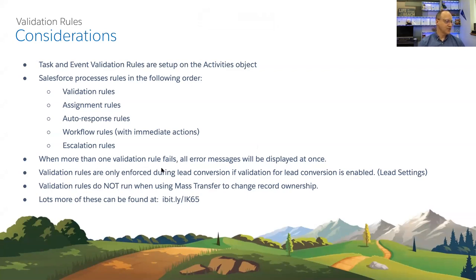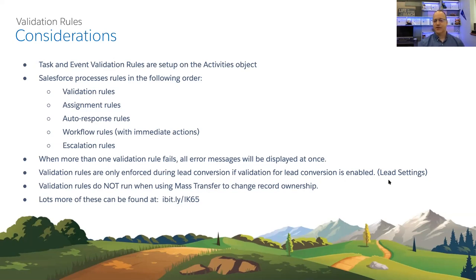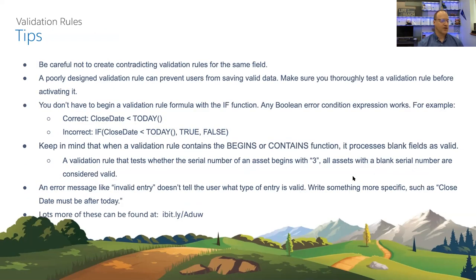When one or more validation rules fail, all error messages are displayed at once — which is helpful for users. Validation rules are only enforced during lead conversion if 'Validation for Lead Conversion' is enabled in Lead Settings — so you have control over that feature being on or off.